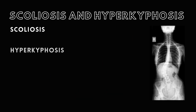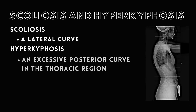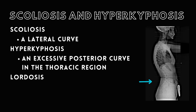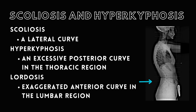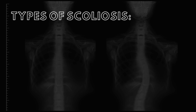Scoliosis and hyperkyphosis are common abnormal spinal curves. Scoliosis is a lateral curve, while hyperkyphosis is an excessive posterior curve in the thoracic region. Lordosis, a less common abnormality, is an exaggerated anterior curve in the lumbar region.